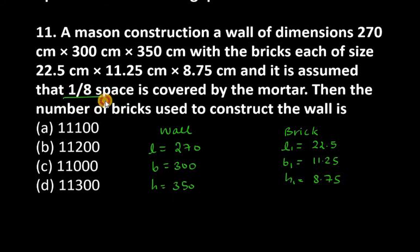Now since 1/8 space is covered by the mortar, this means that the volume of N bricks equals 7/8 times the volume of the wall.